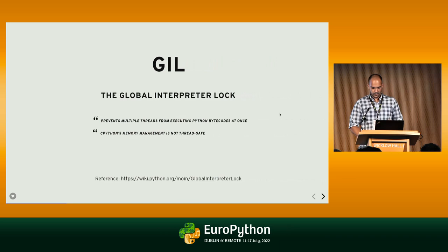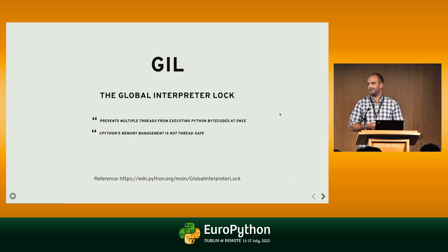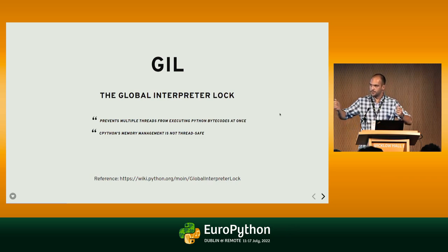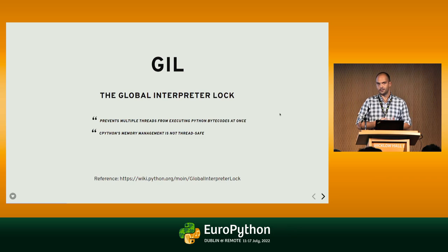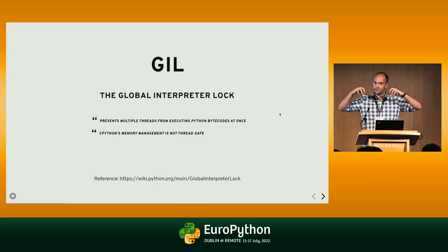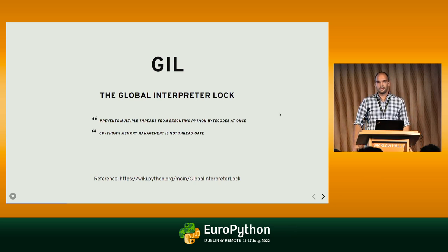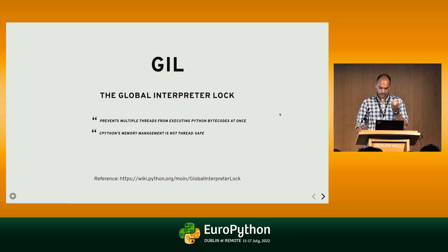Threading in Python is not like threading in Java. Normally in Java you'd use threads to gain more CPU power, but in Python, because of the global interpreter lock, you cannot do that — CPython is not thread-safe. The GIL prevents a single process from handling more than one thread. So you cannot scale in CPUs, but you can unblock your IO operations.